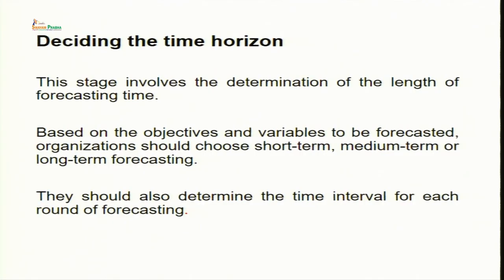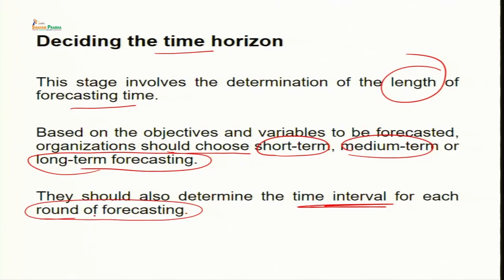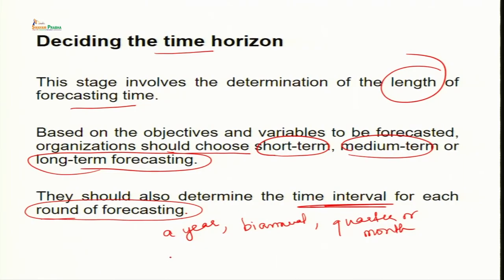The third stage is deciding the time horizon, which involves determining the length of forecasting time horizon. Organizations should choose short term, medium term, or long term forecasting time horizon. They should also determine the time interval for each round of forecasting — this time interval may be a year, bi-annual, quarterly, or monthly. For instance, financial budgets are normally prepared on the basis of annual forecasting, while short term forecasting is appropriate for inventory management.